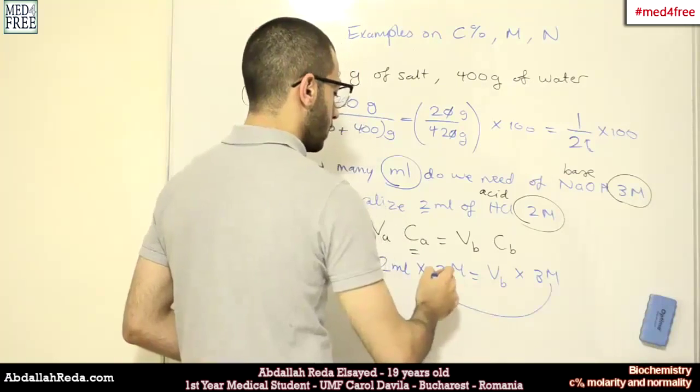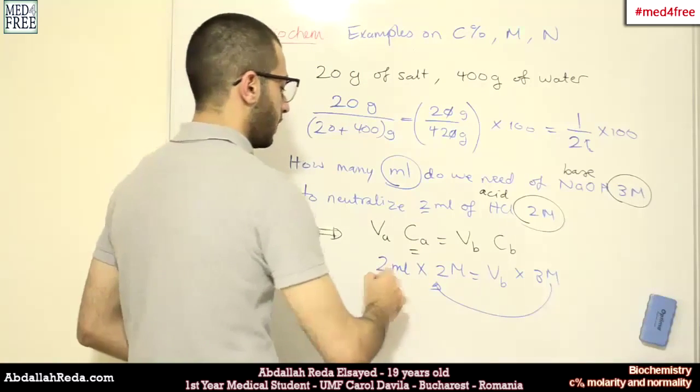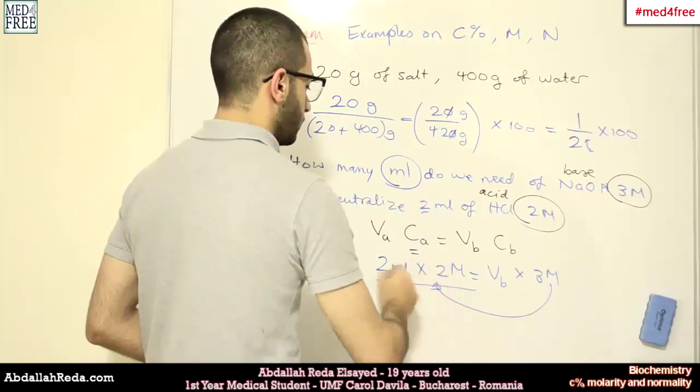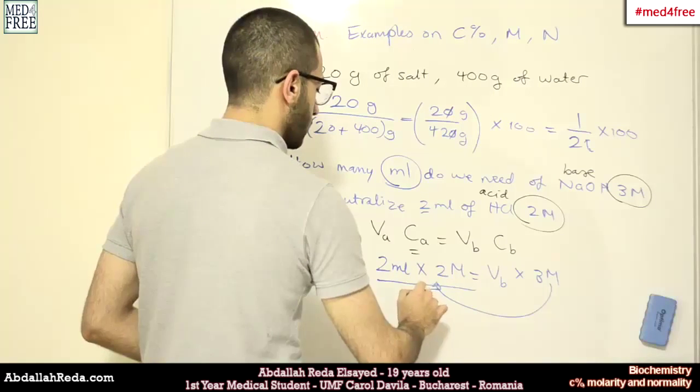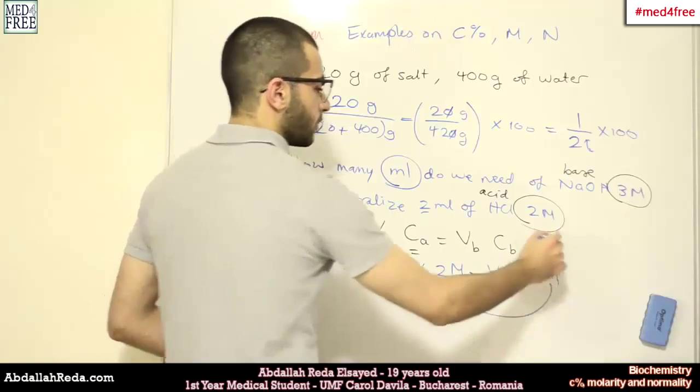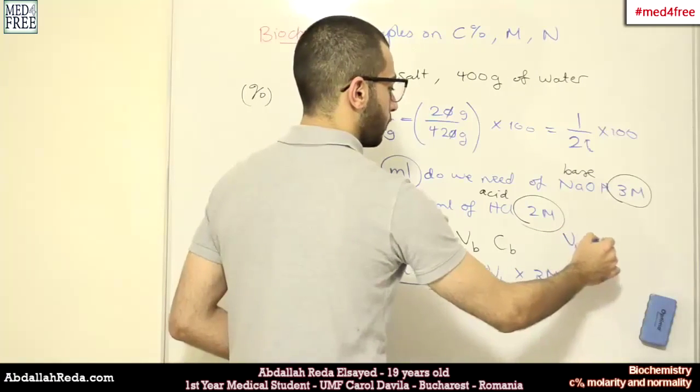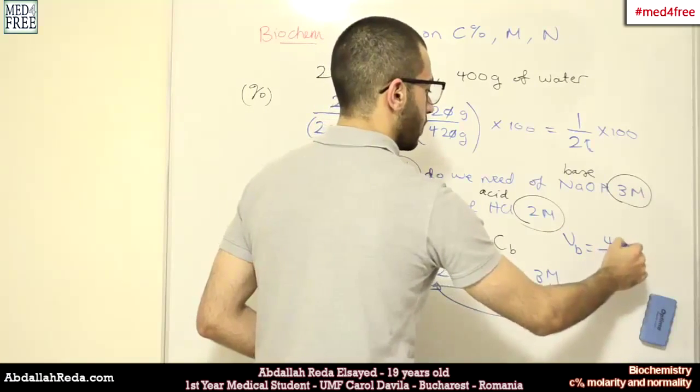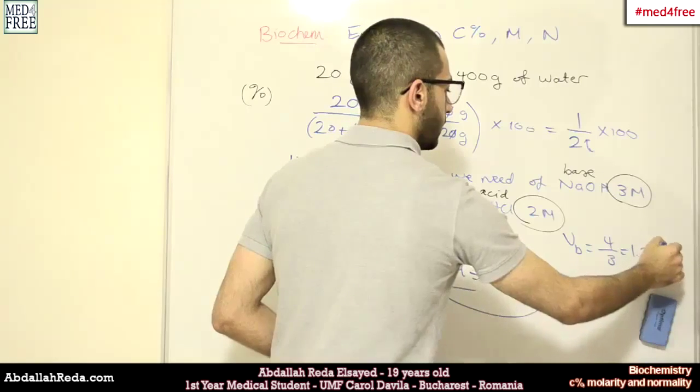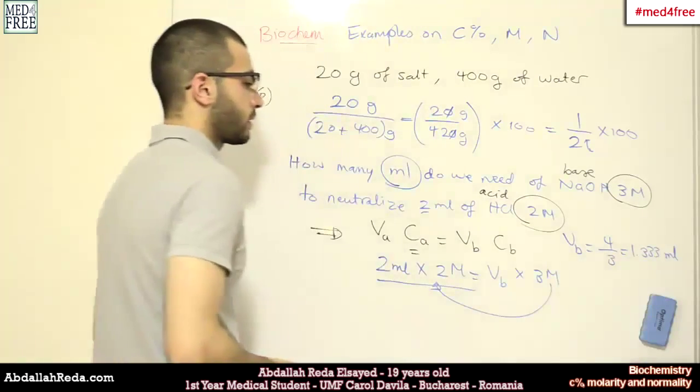This will go on this side, it will be divided by 2 by 2, which is 4, and we have 3, so the volume of the base will equal 4 over 3, which is 1.333 milliliters.